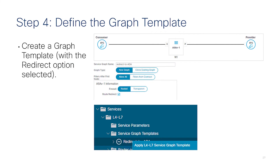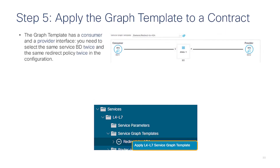Step four: configuration of the graph template. Nothing special to do here — you just need to make sure you select route redirect. And then step five, you apply the graph template.